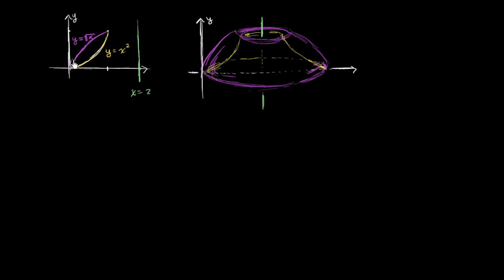What we're going to do in this video is take the region between the two curves — y equals square root of x on top and y equals x squared on the bottom — and rotate it around a vertical line that is not the y-axis. We're going to rotate it around the vertical line x equals 2. We will get this strange looking shape that's hollowed out in the middle, where y equals x squared hollows out the middle, and the stuff in between forms the wall of the rotated shape.